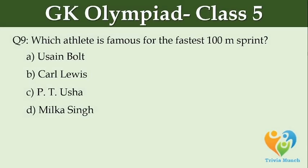Which athlete is famous for the fastest 100 meter sprint? Option A: Usain Bolt. Option B: Carl Lewis. Option C: PT Usha. Option D: Milka Singh.